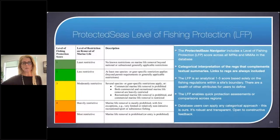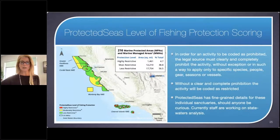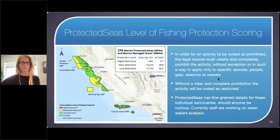When we look at the level of fishing protection scores within the four-sanctuary centric area, here's what it looks like: highly restricted in the State of California marine protected areas, moderately restricted, and then less restrictive in green. Interestingly, national marine sanctuaries generally don't regulate fishing, so this is a depiction of other regulations happening within those boundaries.